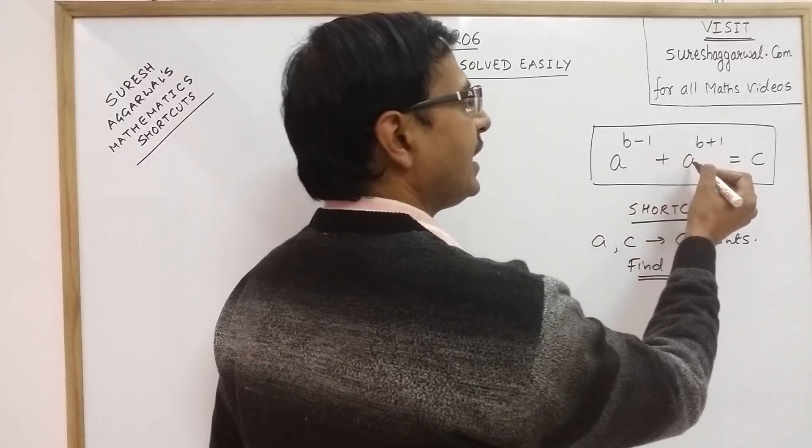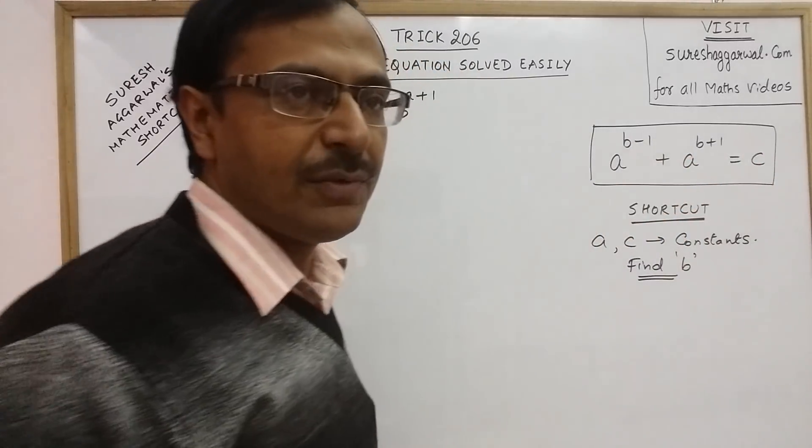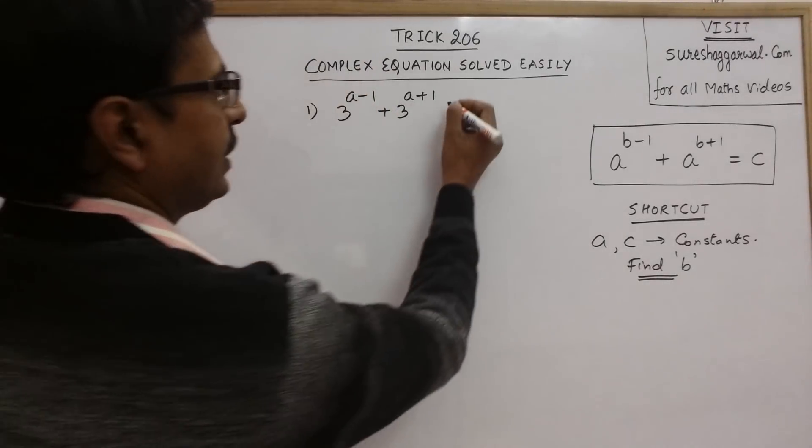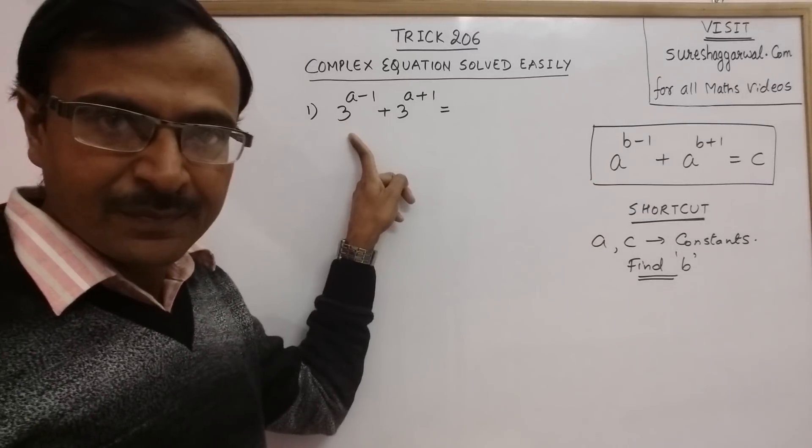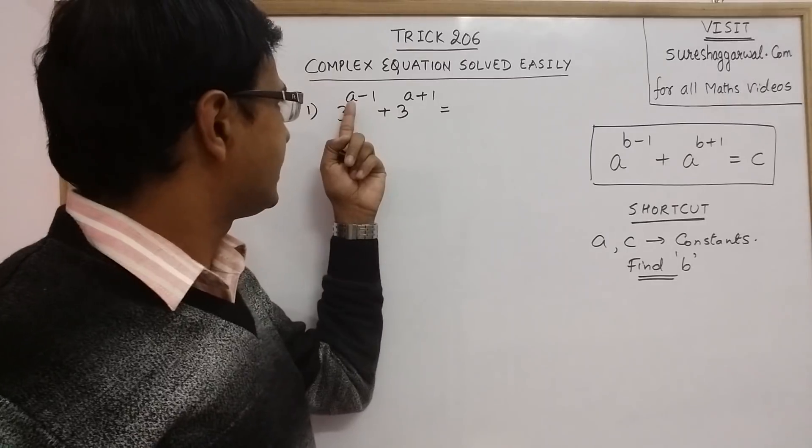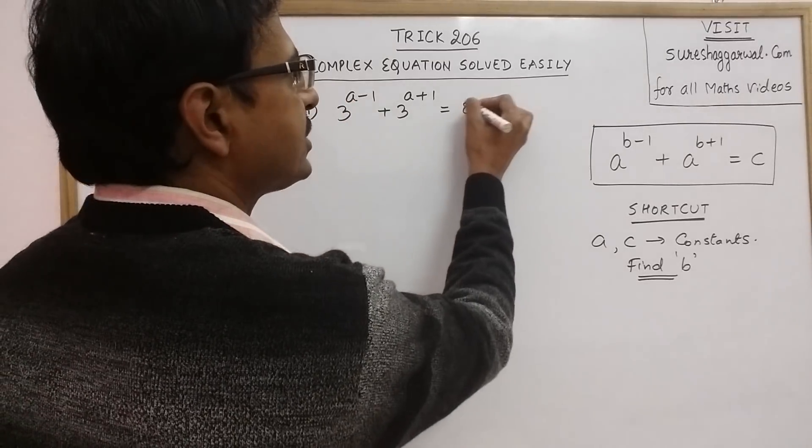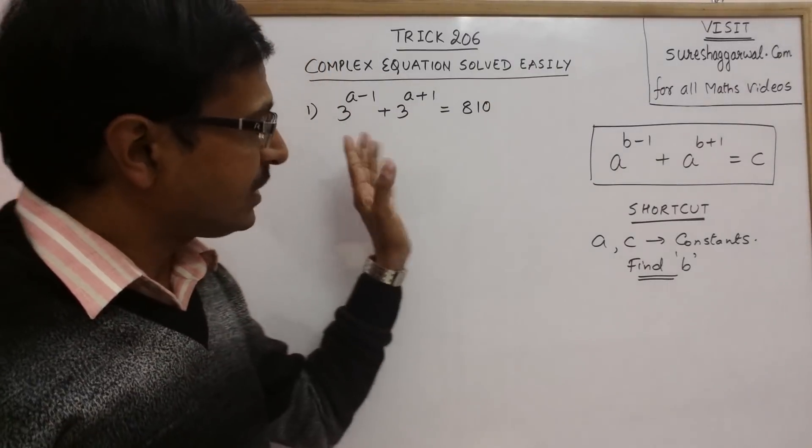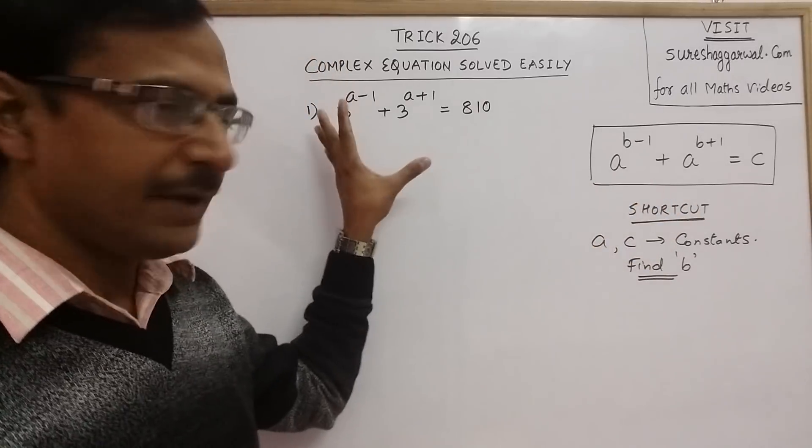So, these two are constants, a and c, these are constants and b is the variable which we need to find out. Now, in this question, I have taken a as 3 and the variable b is changed to a and in the RHS, we have a constant term 810. Now see, we will apply, we will learn this shortcut here and apply it here.